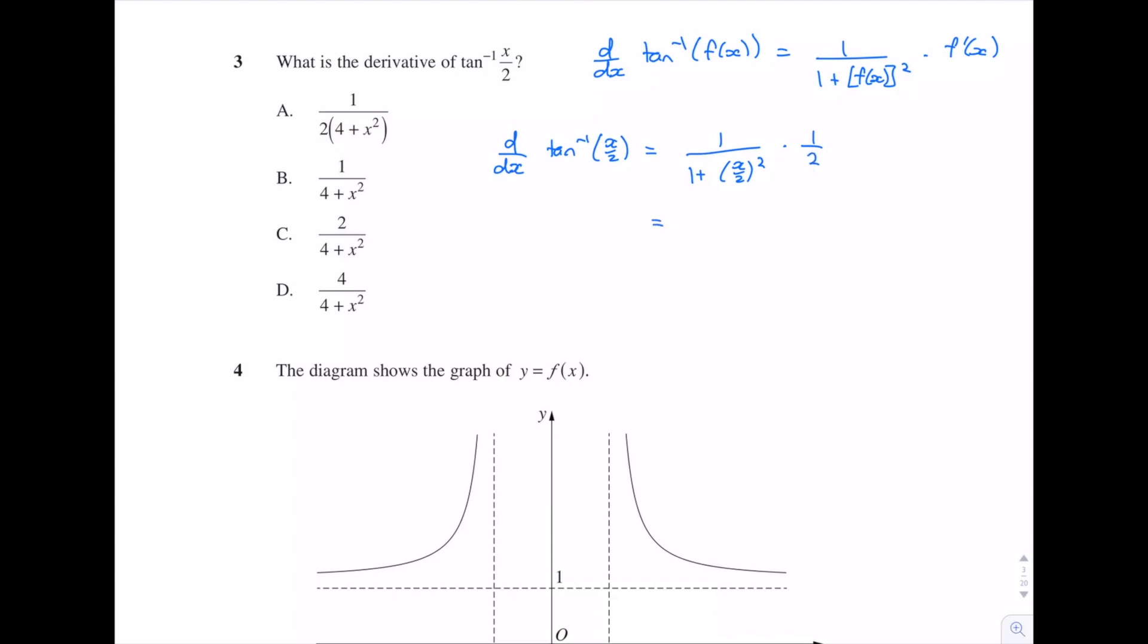So if I multiply the top and the bottom by 4, I'm doing this all in one step, it's going to give us, let's see, we're going to get 2 over 4 + x². So that means our answer should be C.